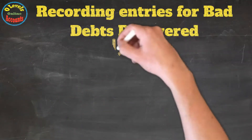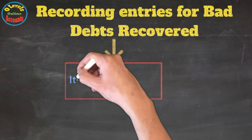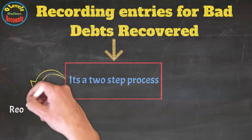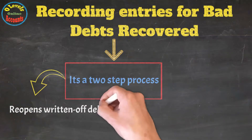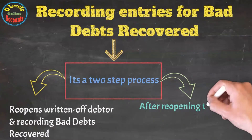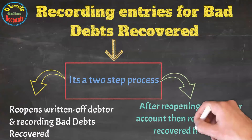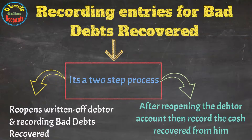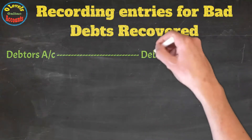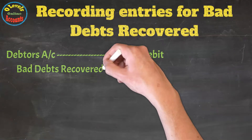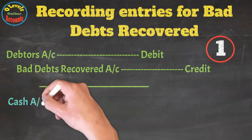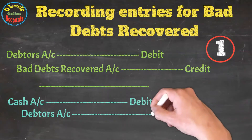Recording entry for bad debts recovered — this is a two-step process. First, reopen the debtor and record bad debts recovered: debtors account debit and bad debts recovered account credit. This is the first step. Then, for the second step: cash account debit and debtor account credit.